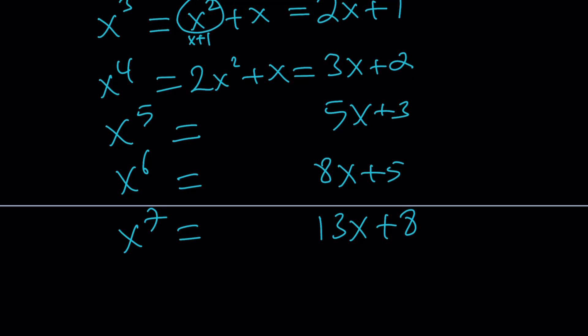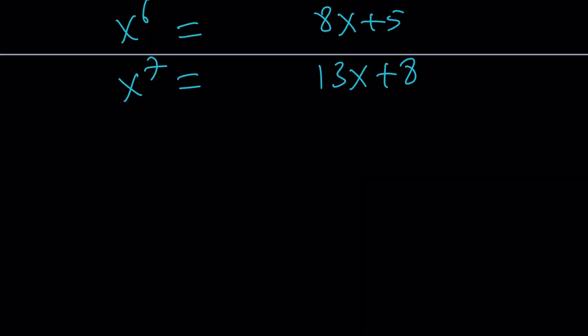I just wanted to show you this is a really nice problem, and you can actually make several problems like these. Let's see how we can apply it to our situation — what does this have to do with our heptic equation? Going back to the equation: 13x to the sixth minus 8x to the seventh equals 1. We're trying to find x values that satisfy this equation.